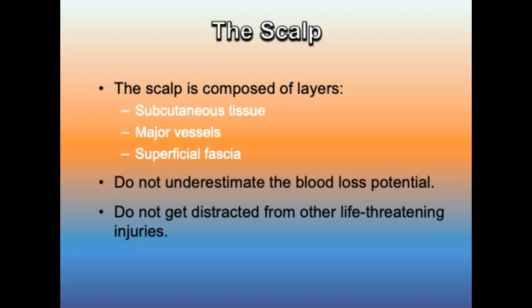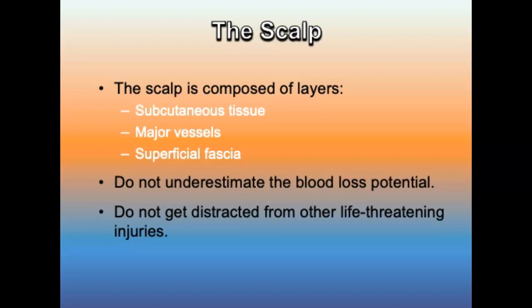The scalp is composed of multiple layers. Subcutaneous tissue contains major vessels that bleed when lacerated, and the superficial fascia is attached to those vessels. Do not underestimate the blood loss potential from scalp hemorrhaging, and do not get distracted from other life-threatening injuries.